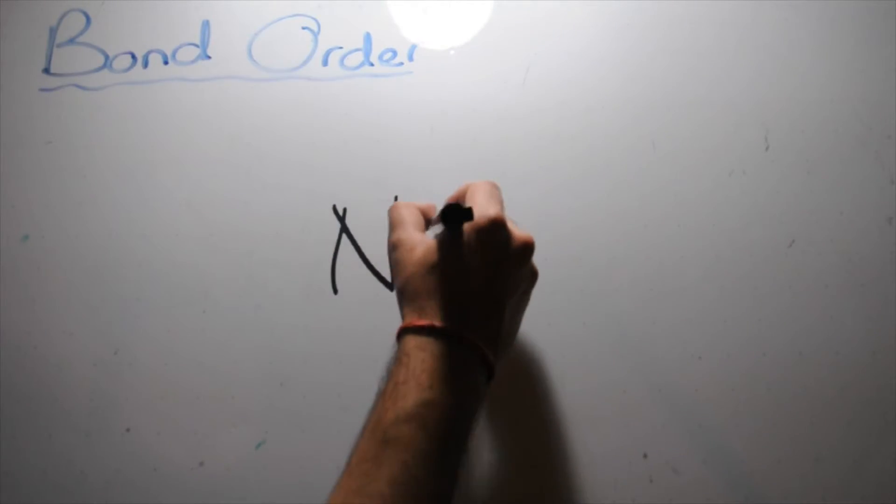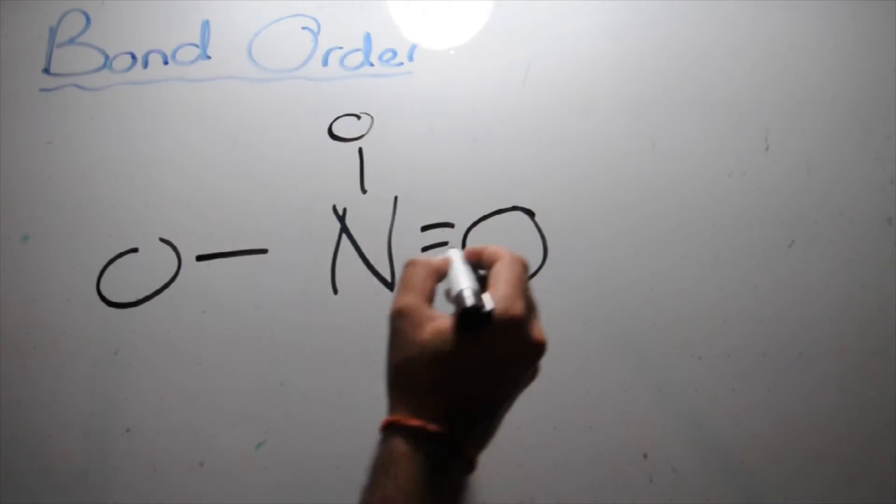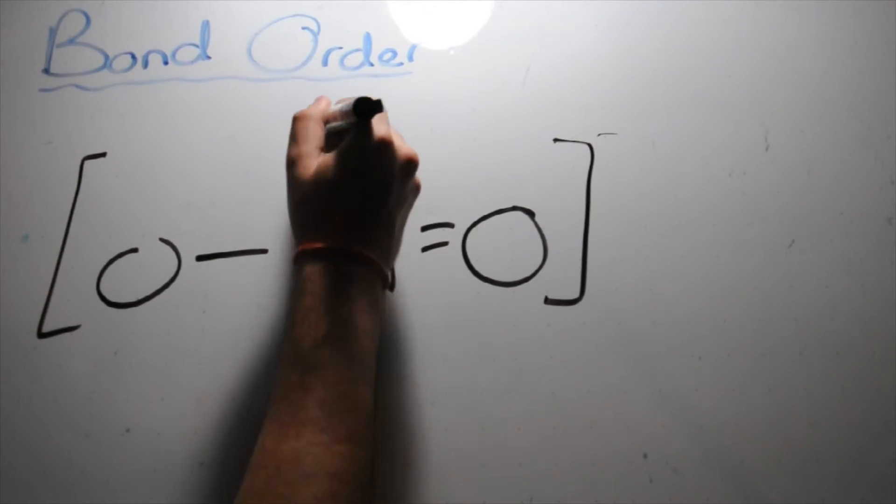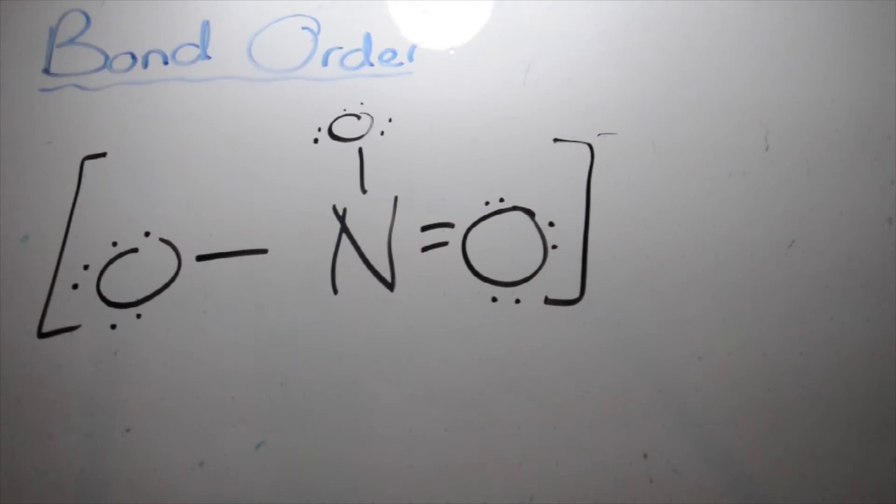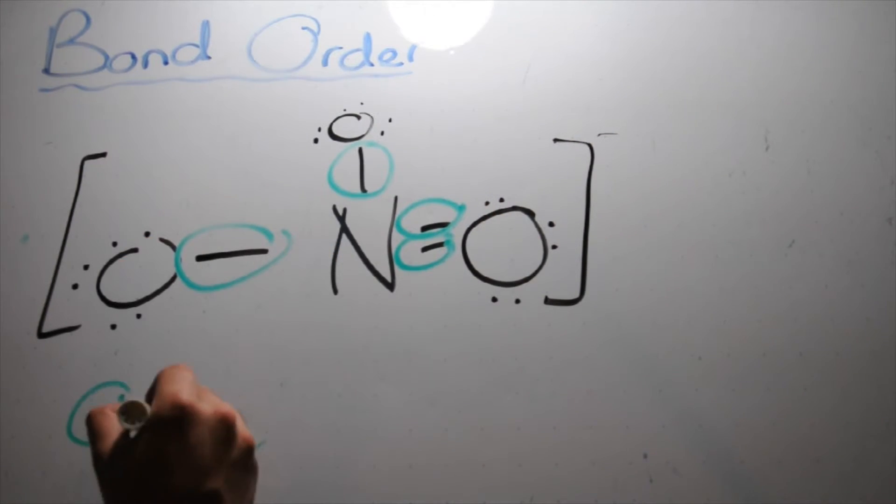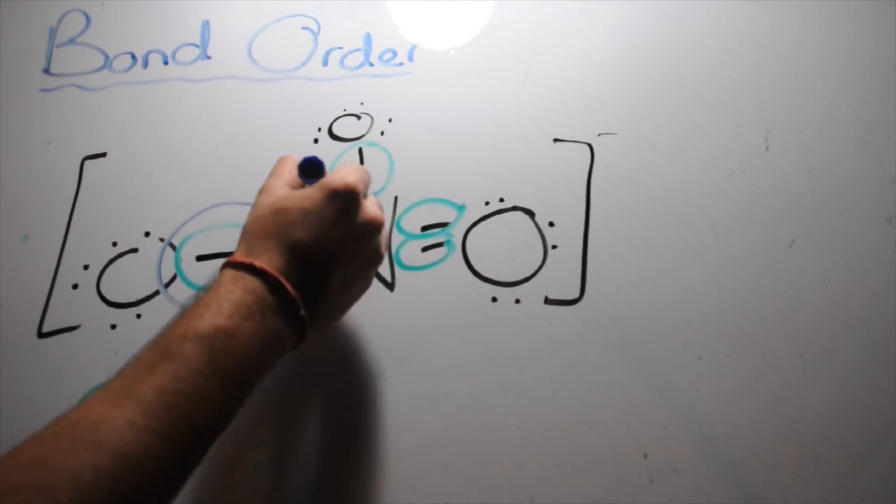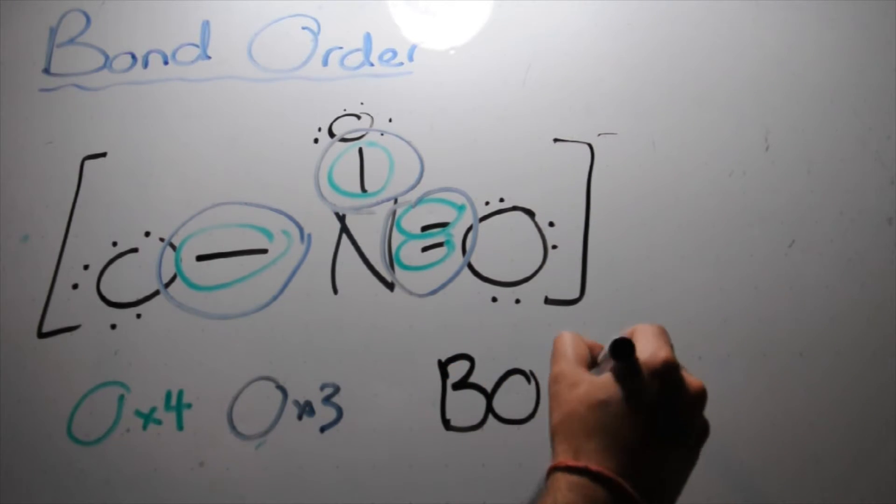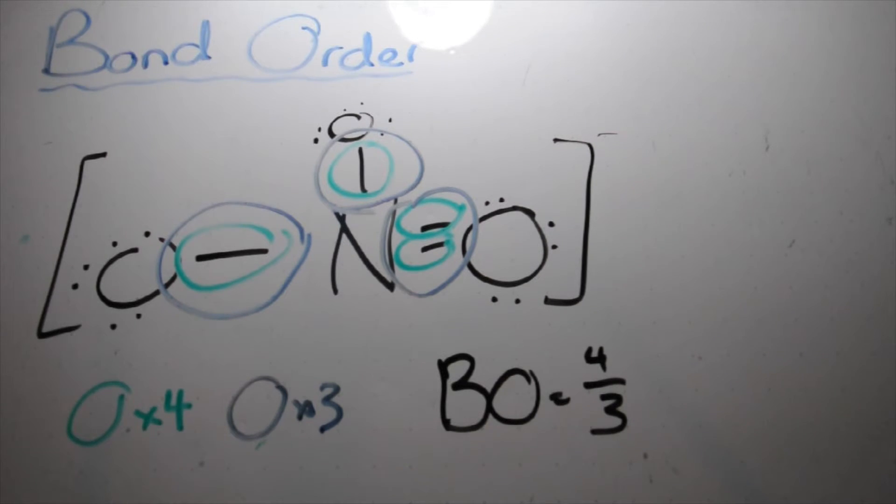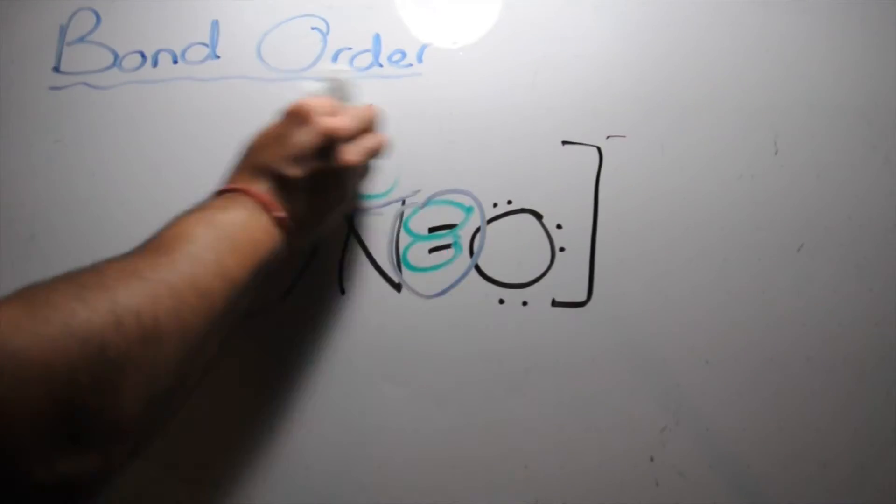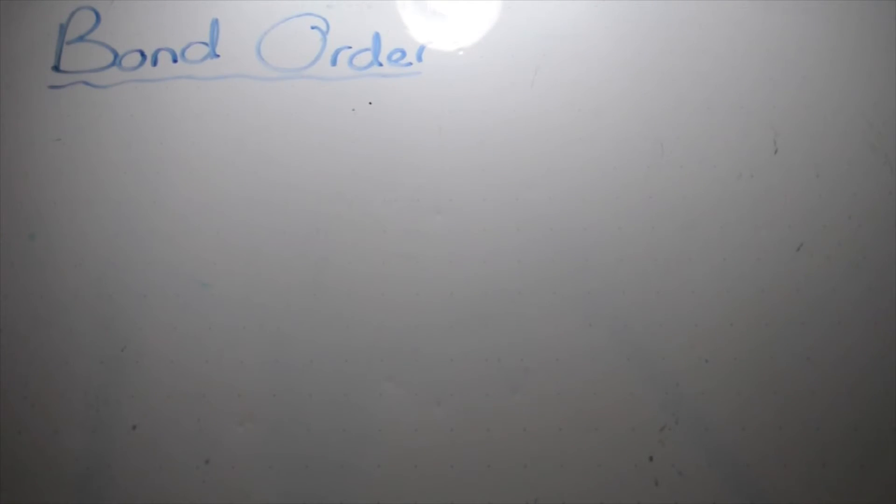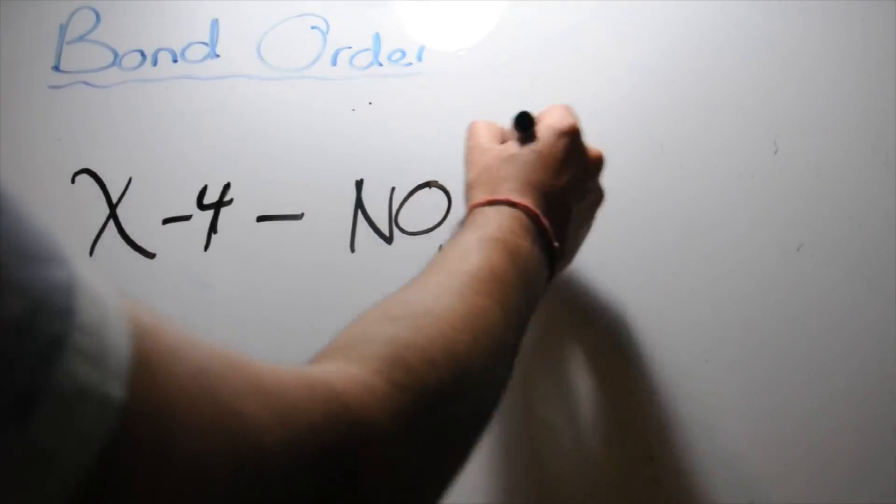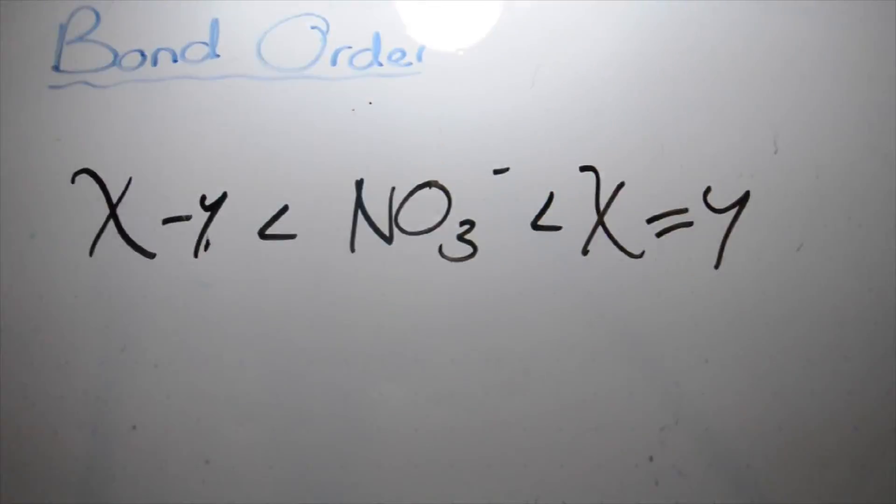However, for polyatomic molecules, it's a bit different. Let's take a look at NO3-, for example. NO3- has a central atom of nitrogen bonded to 3 other oxygens, one of which is a double bond. So the total number of bonds is a double bond, 2, and 2 single bonds, which gives us a total of 4. Then you count the number of bond groups between individual atoms. In this case, there's 3, one for each oxygen. Then you divide the number of bonds between individual atoms by the total number of bonds. So 4 over 3 gives us a bond order of 1.33. This is higher than a single bond, which only has a bond order of 1, which means that the bonds in NO3- are shorter than a single bond, yet longer than a double bond.